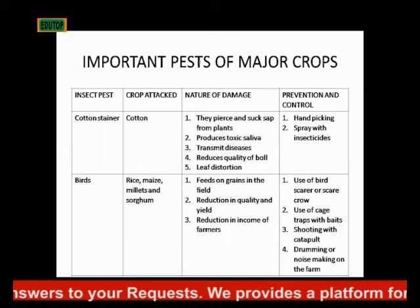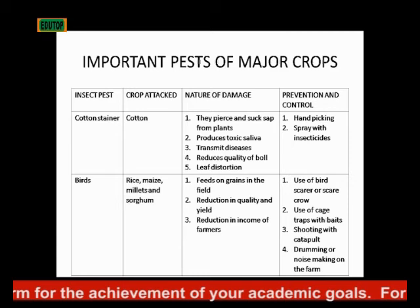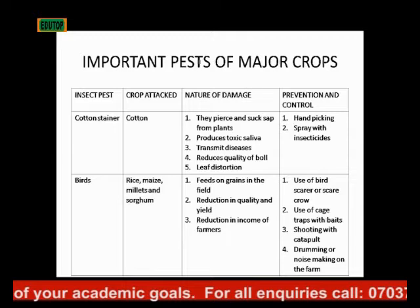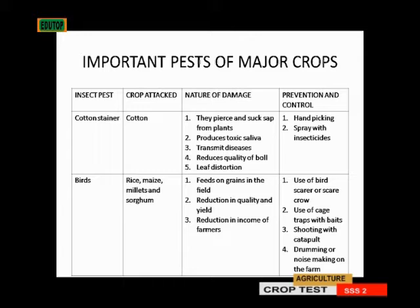How do you prevent birds? You use a bird scarer or scarecrow. When they begin to hear sounds, they think people are there, so you can make that available in your farm to scare away birds. You can use a cage with traps and baits to catch them, you can shoot the birds with a catapult, and you can drum to make noise on the farm.